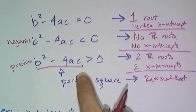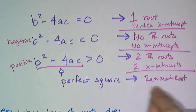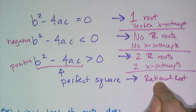Which means, in contrast, if b squared minus 4ac is not a perfect square, that means I'm going to have an irrational root, meaning there's going to be a square root left in my number.